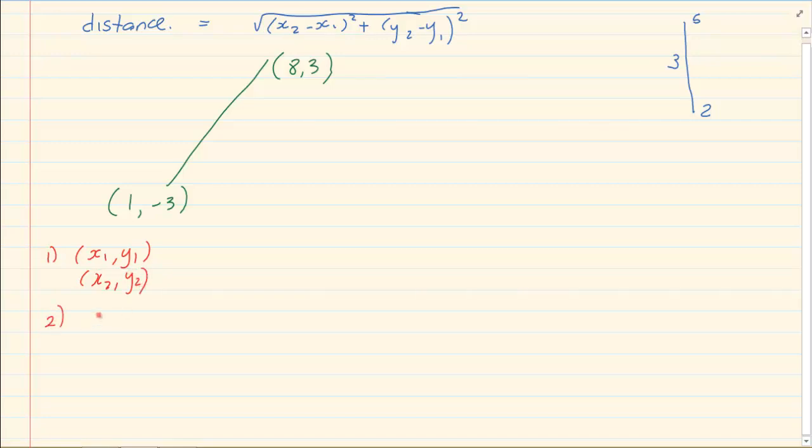Then you substitute and you solve. It does not matter which one you label one and which one you label two, as long as when you label it, you mustn't have a different number for x and a different number for y. That is where the mistake would come in.